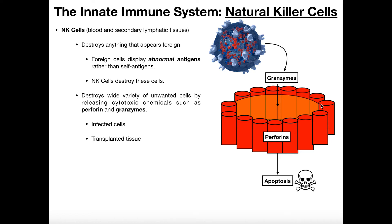So how do natural killer cells do this? They recognize an abnormal self-antigen or foreign antigen and stick to that cell. A cell membrane is designed to keep internal contents in and external contents out — if you poke a hole in that membrane, the cell can no longer regulate its internal environment and it will die. Natural killer cells release proteins called perforins, which are cylindrical-looking proteins that arrange themselves in a circle and create a perforation — a hole — in the cell membrane.